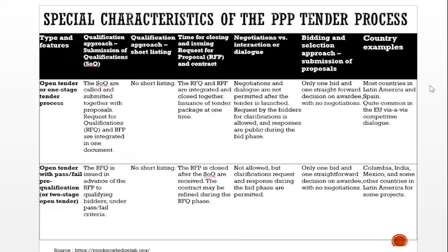Bid and selection approach: only one bid and one straightforward decision on awardee, with no negotiation. Country examples: most countries in Latin America and Spain; quite common in the EU. Under open tender with pass or fail pre-qualification or two-stage open tender: the RFQ is issued in advance of the RFP to qualify bidders under pass or fail criteria — no shortlisting. The RFP is closed after the SOQ are received. The contracts may be refined during the RFQ phase.